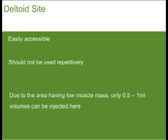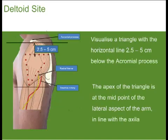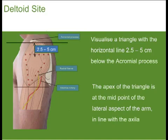The deltoid muscle is easily accessible but should not be used repeatedly for injections. Due to its low muscle mass, volumes between 0.5 mL to 1 mL can be injected. The deltoid muscle area is located by first visualising a straight line horizontally 2.5 to 5 centimetres below the area of the acromial process, depending on the individual's muscle mass. A second horizontal line is then drawn from the midpoint of the arm in line with the axilla. Between these lines, a triangle with its apex touching the lower line and base at the upper defines the area where the injection should be delivered into the muscle.